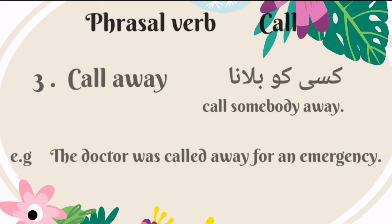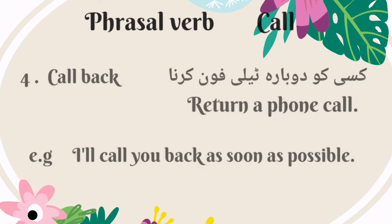The third phrasal verb is 'call away.' Its meaning is call somebody away — Urdu mein is ka matlab hai kisi ko bulana. For example: the doctor was called away for an emergency. The fourth phrasal verb is 'call back.' Its meaning is return a phone call — Urdu mein is ka matlab hai kisi ko dubara telephone karna. For example: I'll call you back as soon as possible.